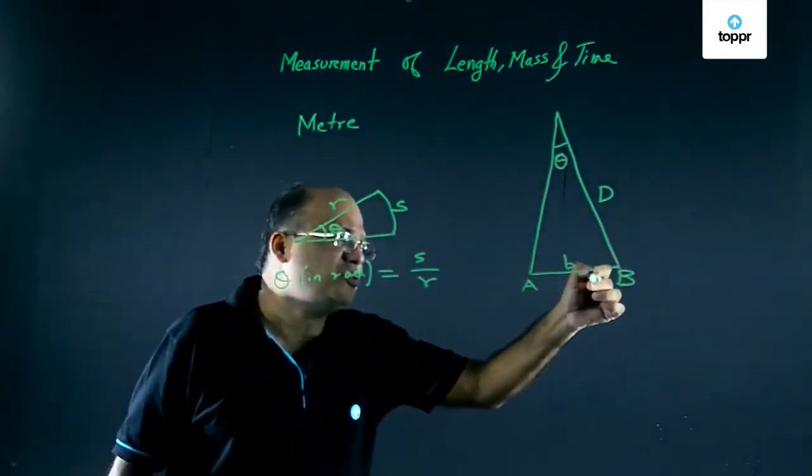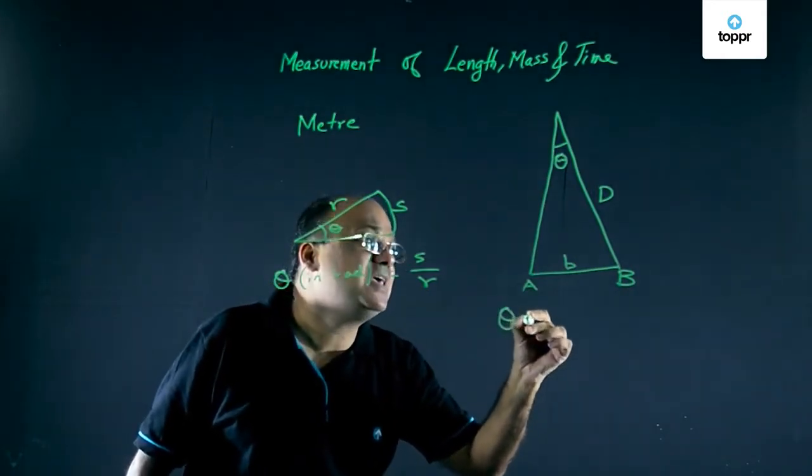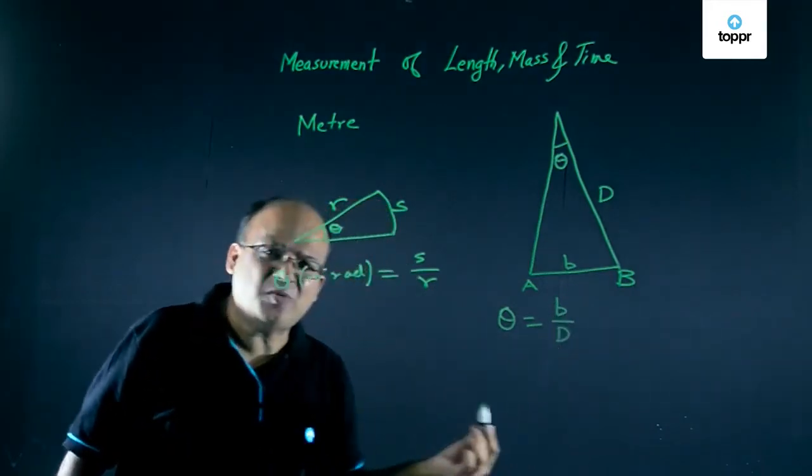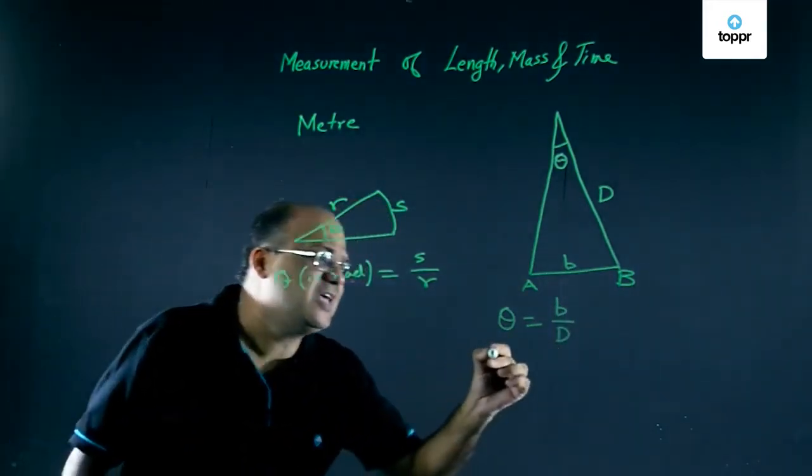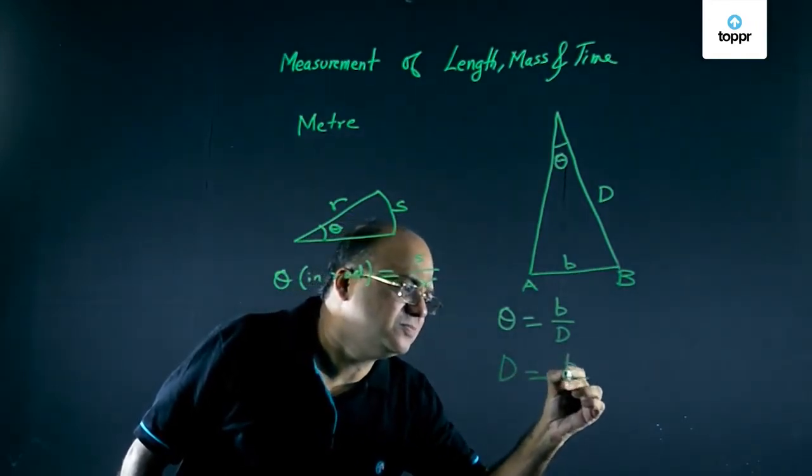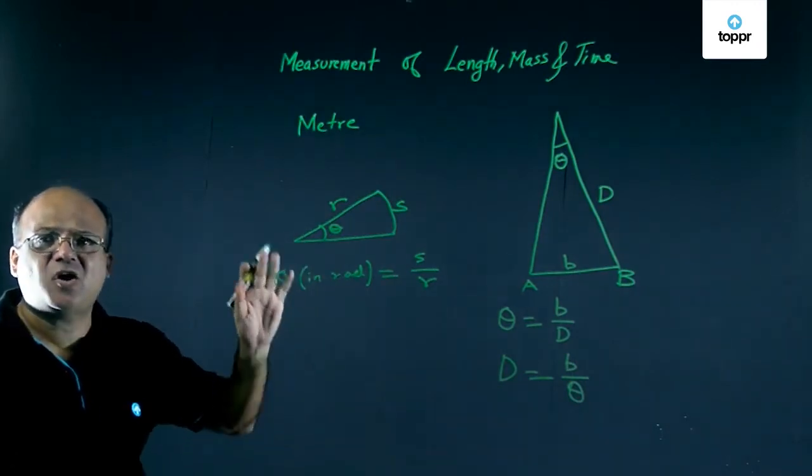Now if we take this almost as an arc, theta in radians will be B upon D. Now we can easily find D. D will be B upon theta. So now we know the distance to the star or planet.